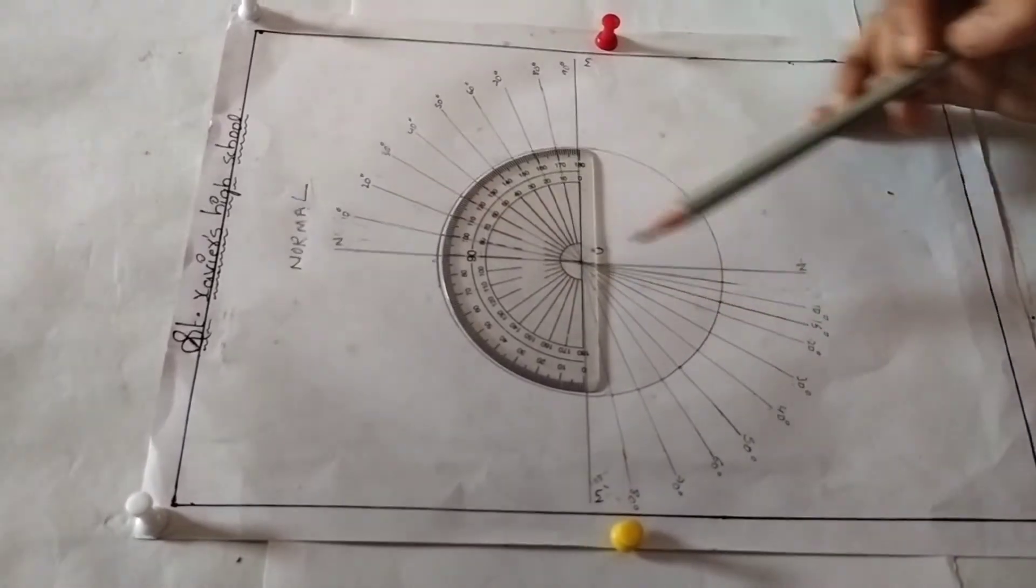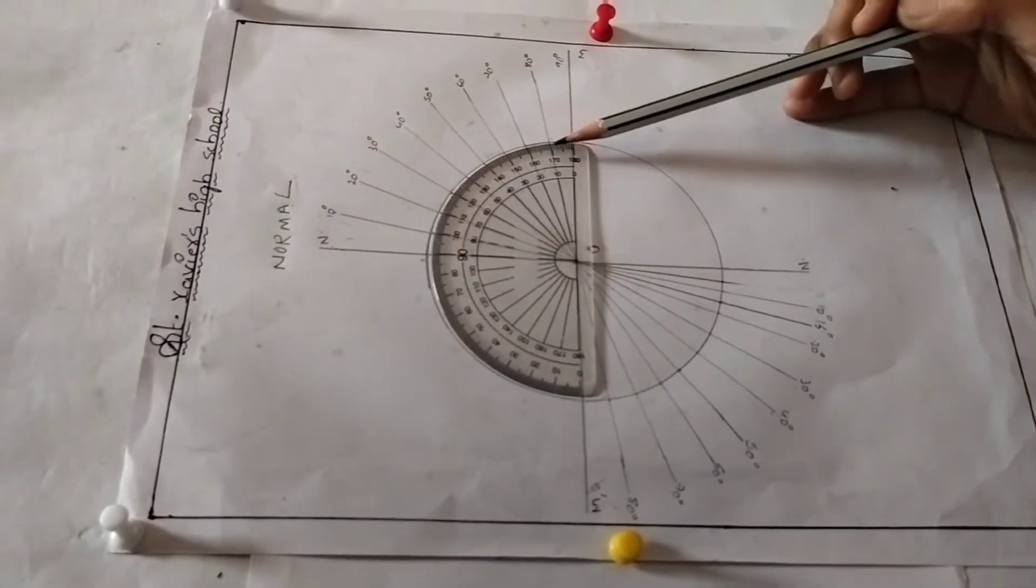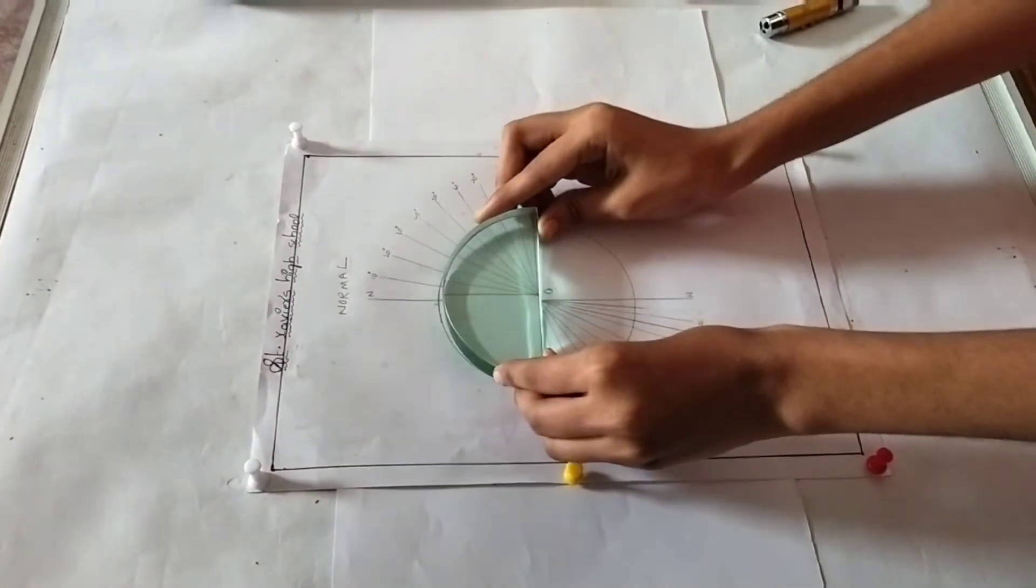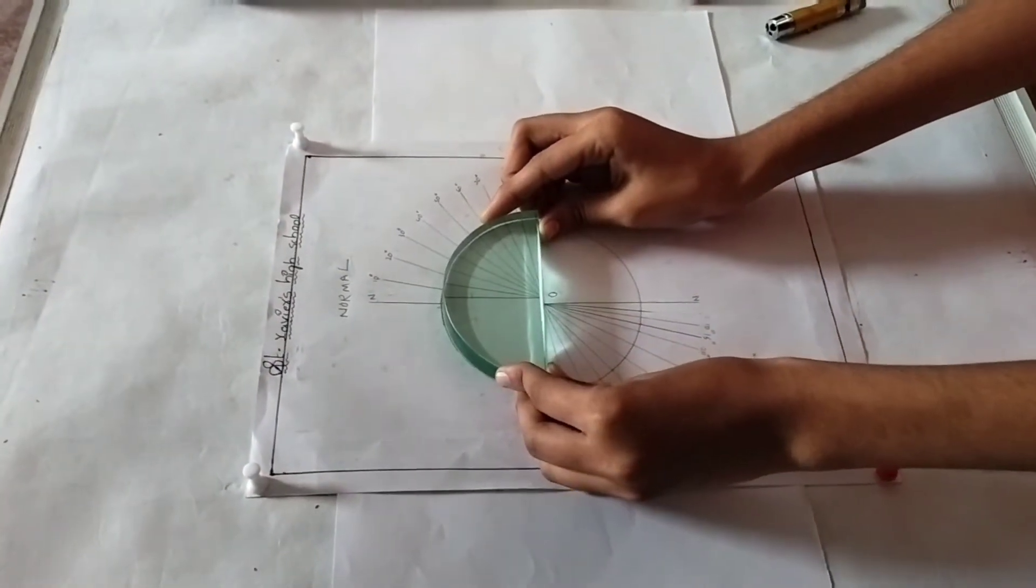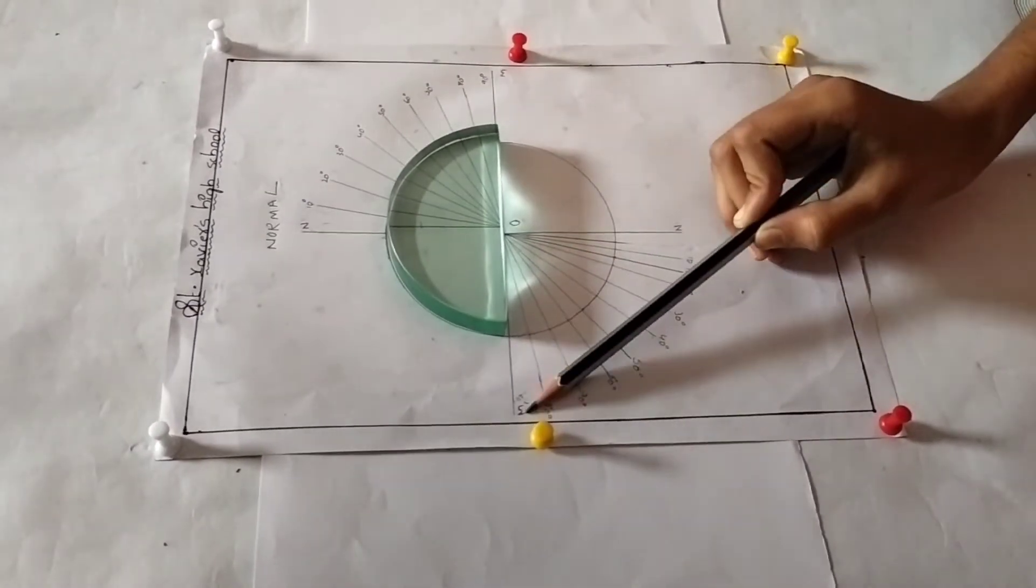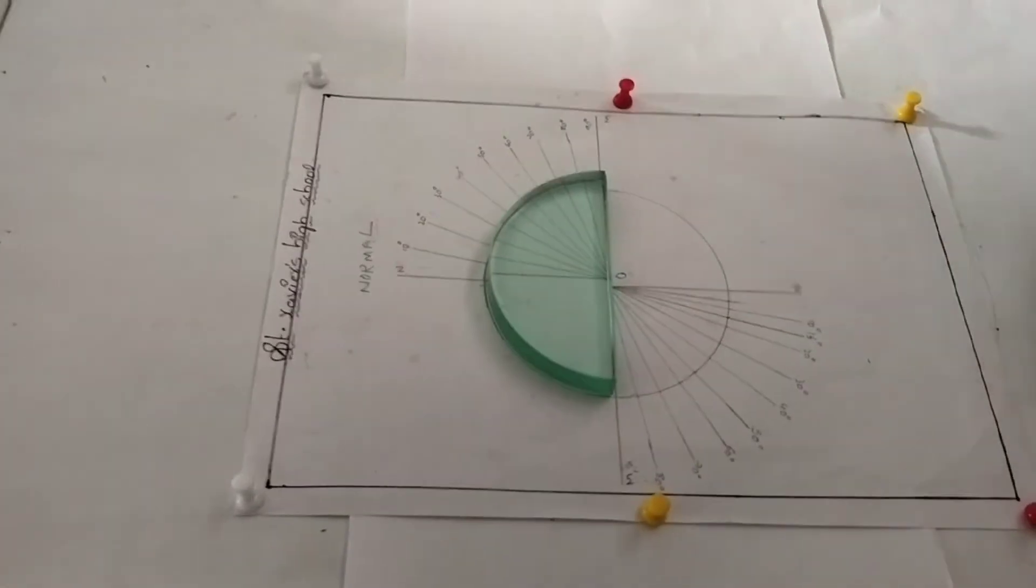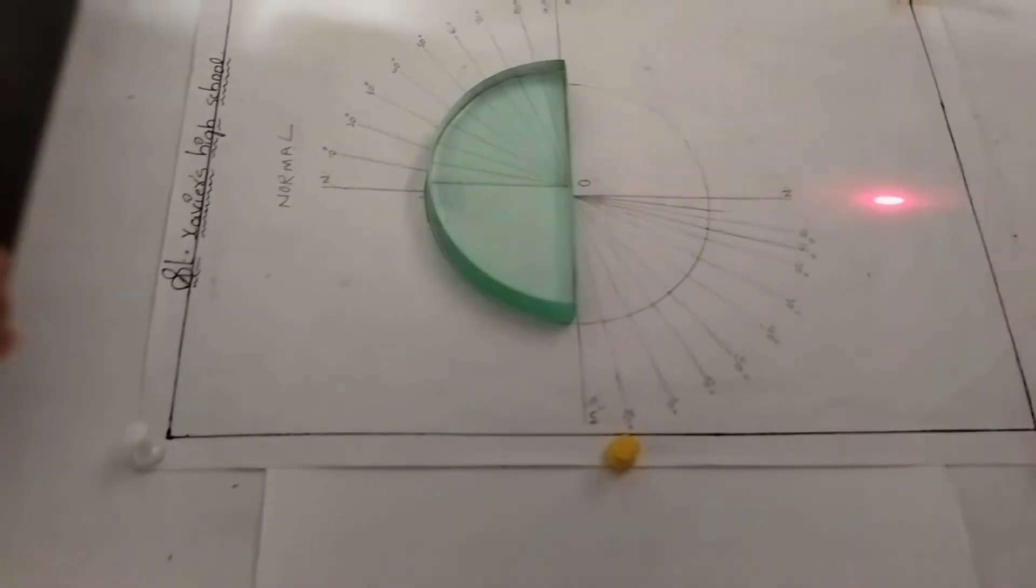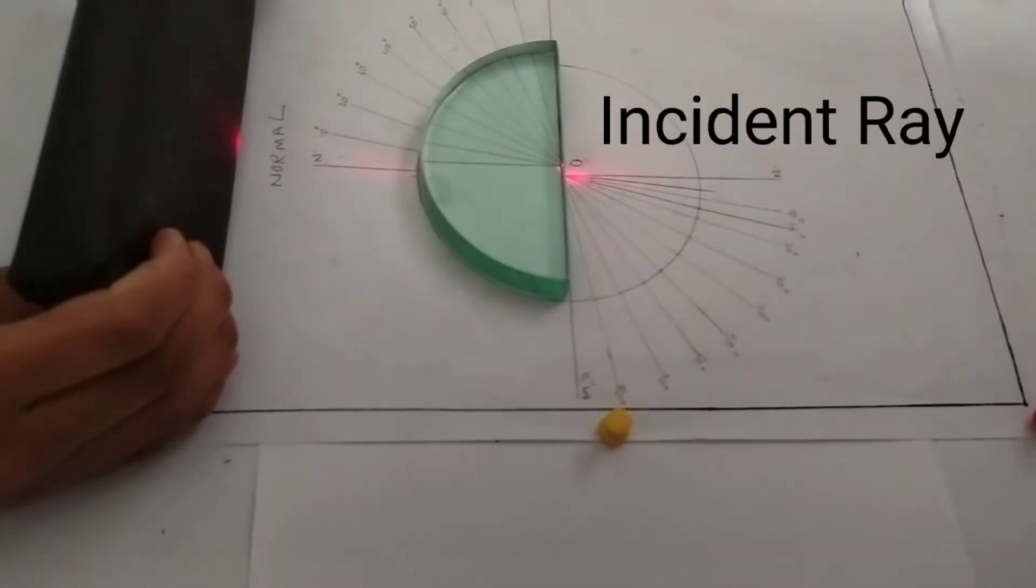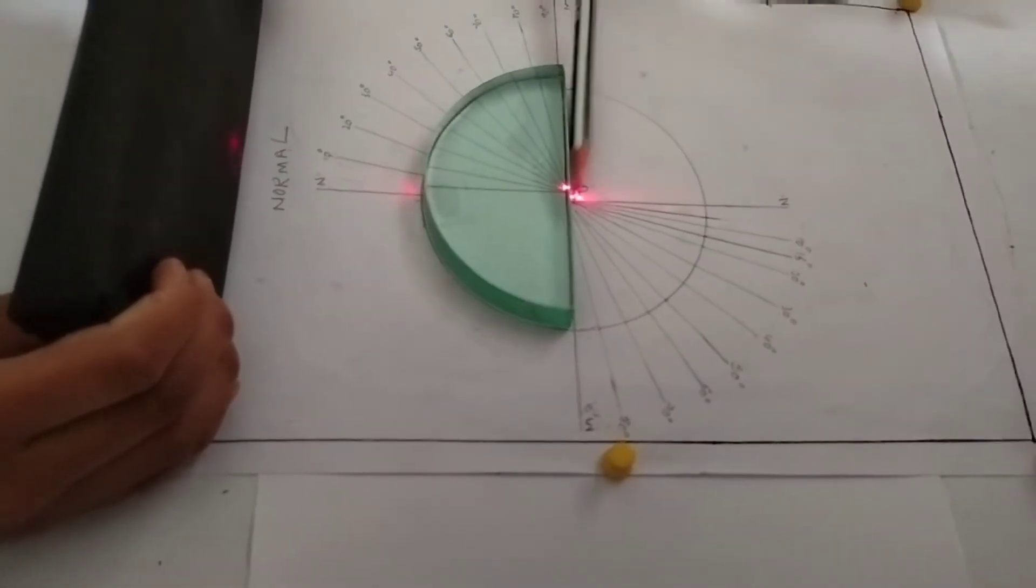Now place a semicircular glass disc so that its diameter coincides with the interface line MM and its center coincides with the point O. Point the laser light along NN in such a way that the light propagates from air to glass through the interface at point O.